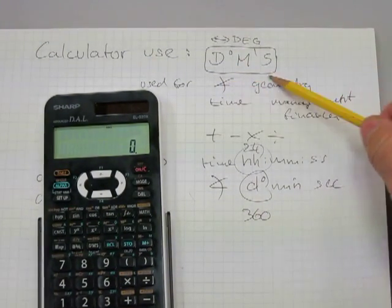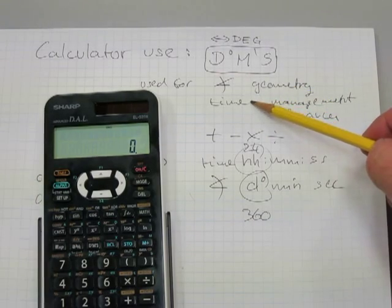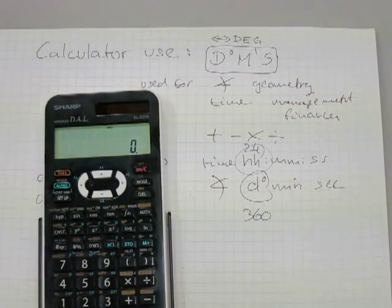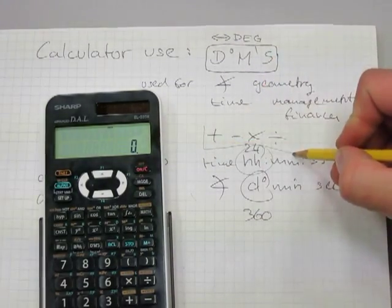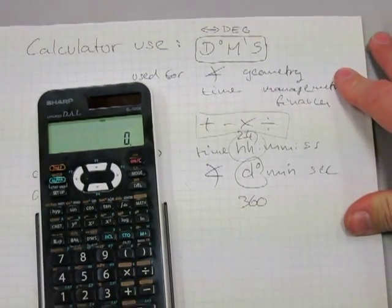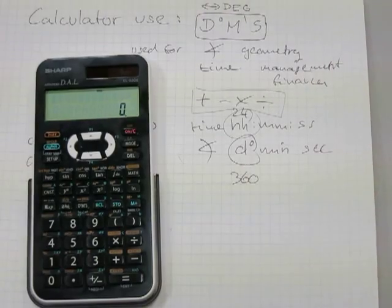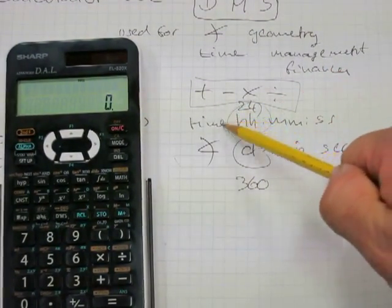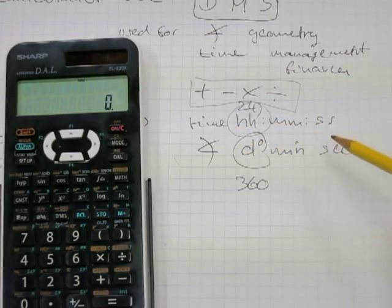The calculator's functions—the add, subtract, multiply, and divide functions—work perfectly well with this button. Like I said, it's good for time in hours, minutes, and seconds format, as well as for angles in a circle: degrees, minutes, and seconds format.